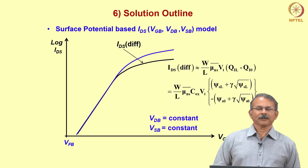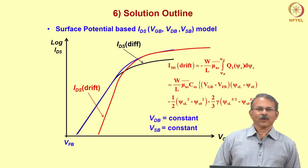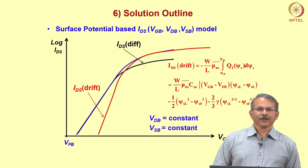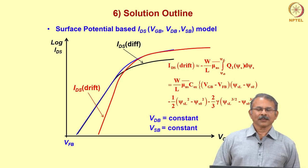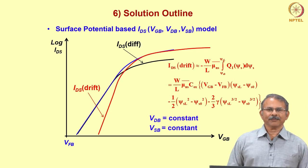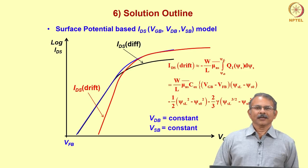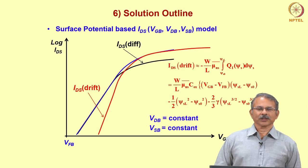The diffusion component plot looks like the black curve here, and this diffusion current actually matches the total current in the device for lower gate voltages. For higher gate voltages, you have the drift current shown by the red curve. At lower voltages, diffusion current dominates over drift; at higher voltages, drift current dominates over diffusion.